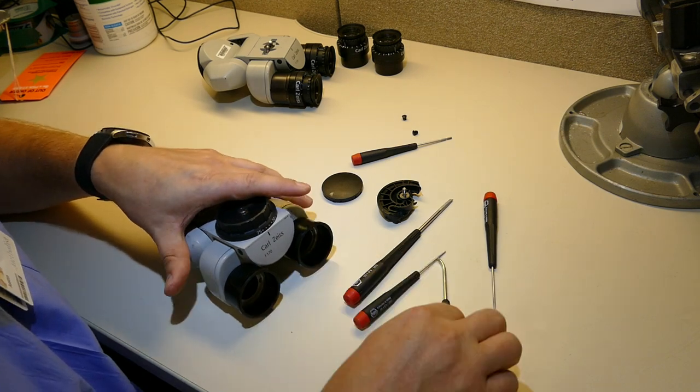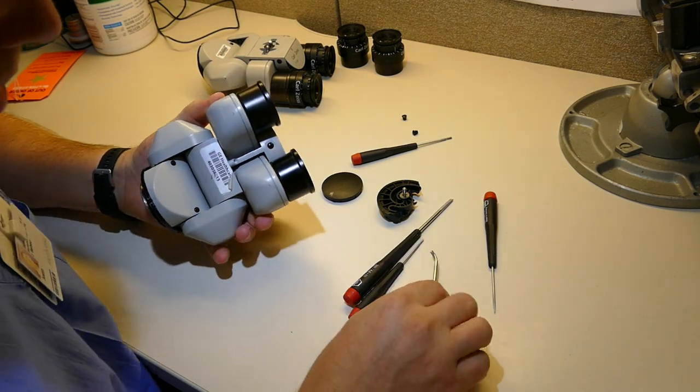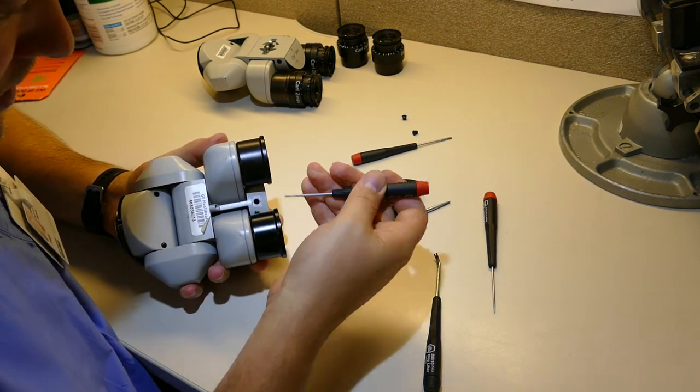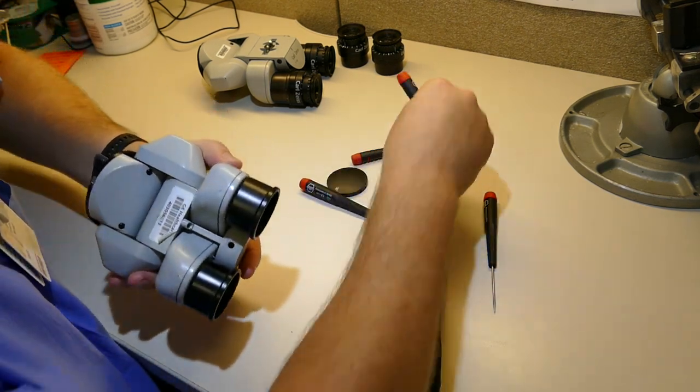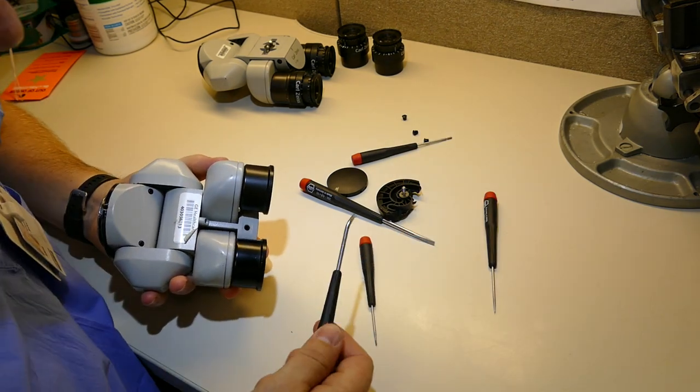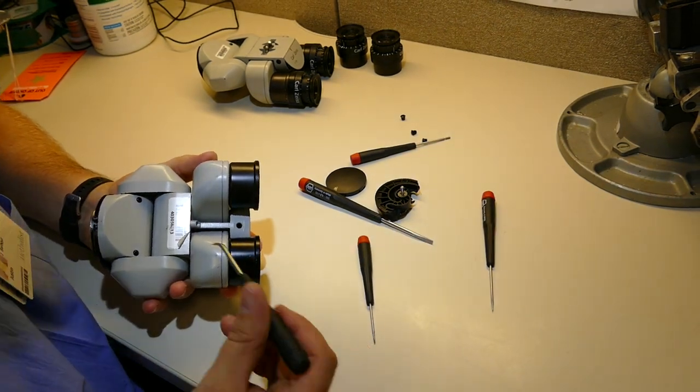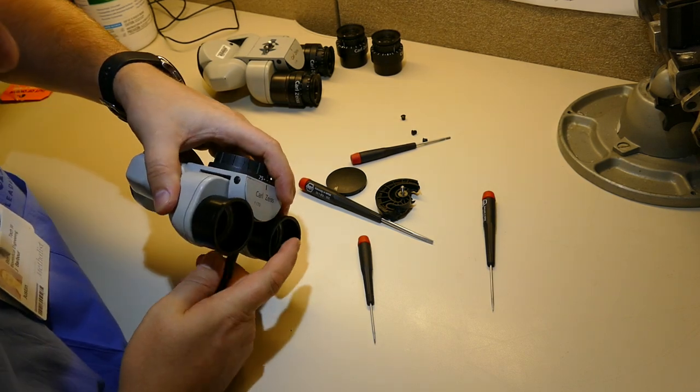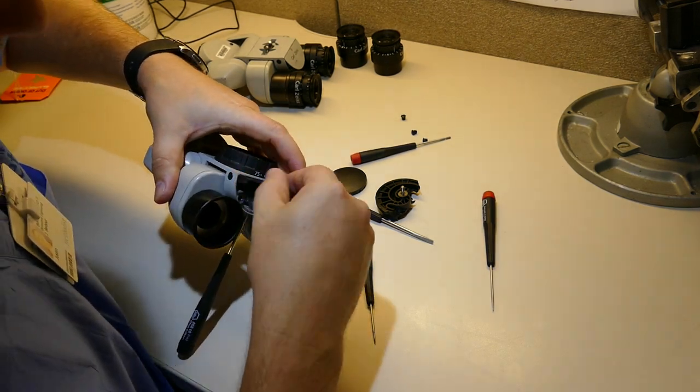Same thing on the second unit. We're going to pop off the little cover. I'm going to stick in my chip lifter and pry open the cover. There it goes.